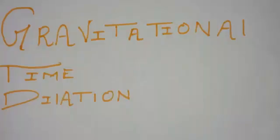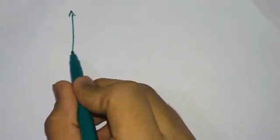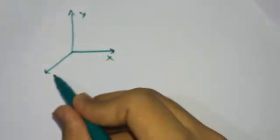Gravitational time dilation explains how time is stretched or how time is actually affected by gravity. Before starting with anything, let me show you your three-dimensional world, which simply consists of the x-axis, y-axis, and z-axis. Every normal person would think a three-dimensional world is sufficient, but you're not normal — and you know what the fourth dimension is.